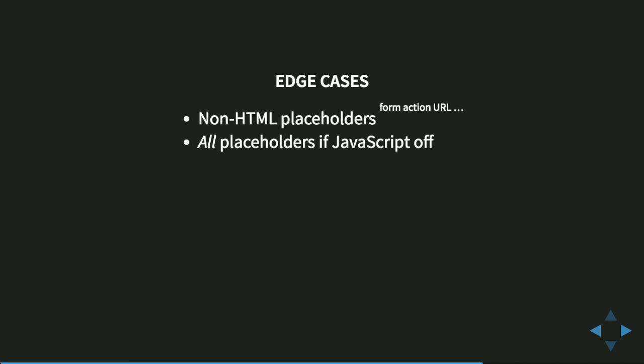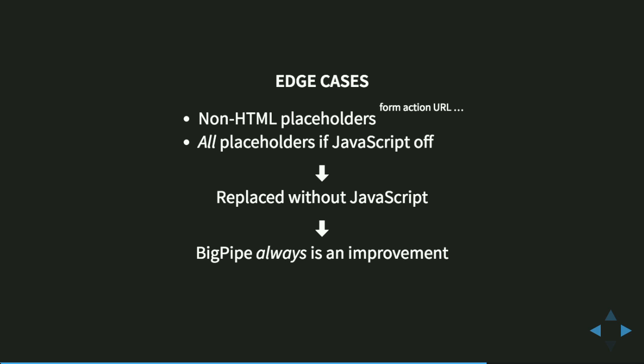When JavaScript is turned off, or for placeholders that aren't efficiently replaceable with JavaScript, we use a different approach. In those cases, we send the HTML until the first placeholder we encounter, stop sending, work to replace that placeholder, send it, then send the subsequent HTML into the next placeholder. We have many small steps instead of sending a large initial chunk. That's unfortunate but at least you still have streaming, which still makes things significantly faster. In other words, BigPipe is always an improvement even if JavaScript is turned off.